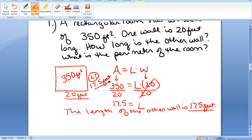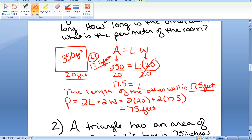Perimeter is the distance around the outside. For a rectangle, we travel 2 times the length plus 2 times the width, so 2 times the 20, plus 2 times the 17.5, which is 75 feet. The perimeter of the room is 75 feet.